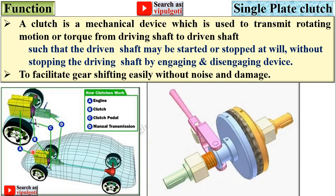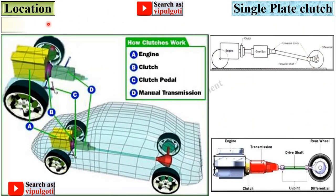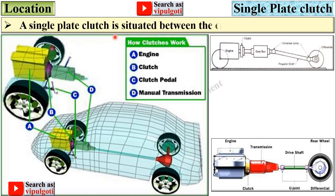Here you can see the location of the clutch in the car. A single plate clutch is situated between the engine and the gearbox. Here you can see the engine on one side and the gearbox on the other, with the clutch — shown in purple — in between. This is a simple diagram you can use in the examination.